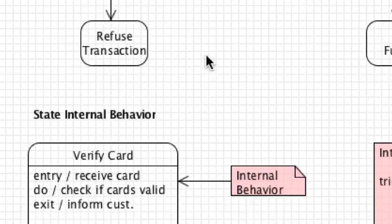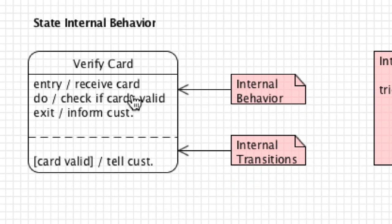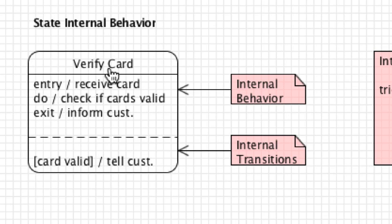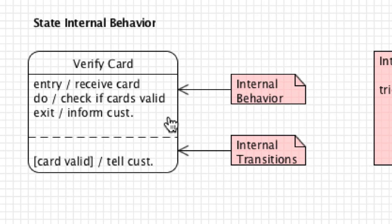There are other types of state internal behavior. In this situation you put both an entry point — what's going to happen when you reach the 'verified card' state, such as receiving the card and checking if it's valid — and an exit statement, all handled inside the state. Internal transitions cause something to happen but do not force the system to leave the state itself. You always want to use transition arrows to leave the state.